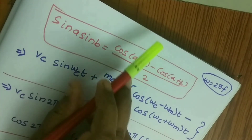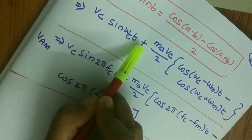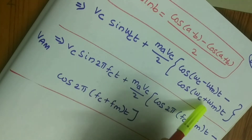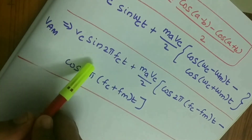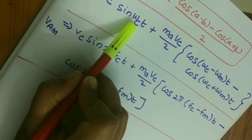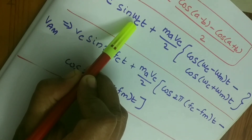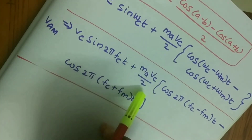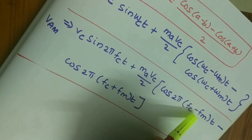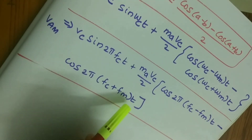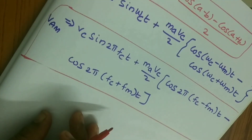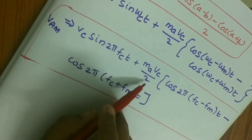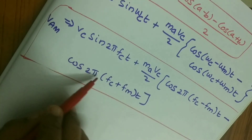Substituting omega = 2 pi F, by expanding the equation we get the final expression: Vam(T) = Vc sine(2 pi Fc T) plus (Ma Vc / 2) cos(2 pi (Fc minus Fm) T) minus (Ma Vc / 2) cos(2 pi (Fc plus Fm) T). This is the final expression for the AM voltage distribution.